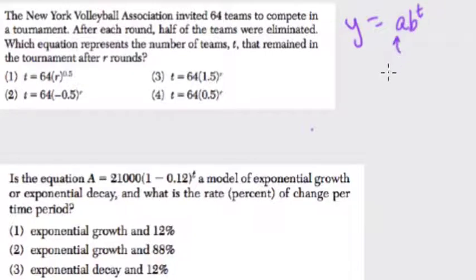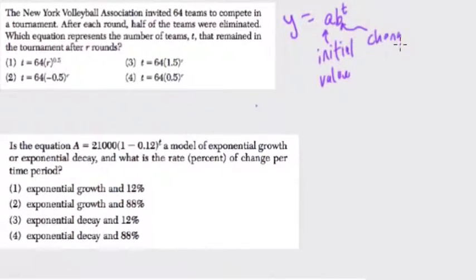Where a represents your initial value, b represents your change - how much is growing, how much is your value increasing or decreasing each year - and t represents the time period, specifically the time period of the growth.